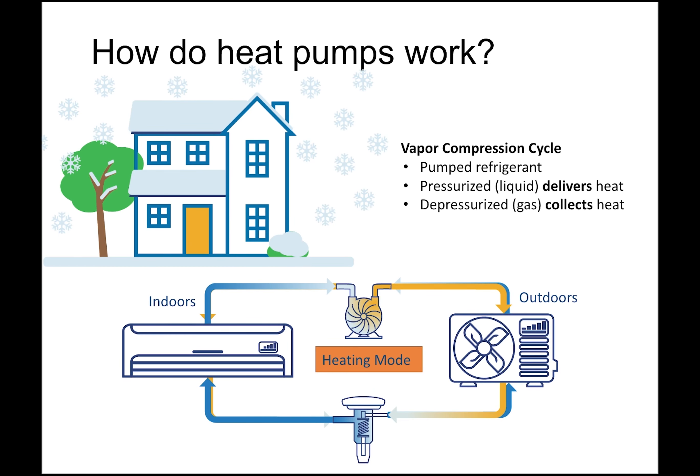Cold climate air source heat pumps work through the use of the vapor compression cycle, combined with advanced refrigerants, variable speed drives on the compressor and fans, and an algorithm-driven control system. Although heat pumps of the past also utilized the vapor compression cycle, they do not include these additional features that provide greater efficiency and cold weather operation without supplemental heat. The cold climate air source heat pump is able to toggle between heating and cooling mode simply by the flip of a switch.